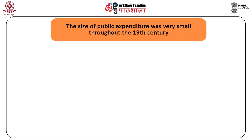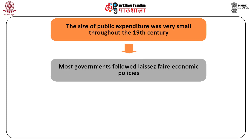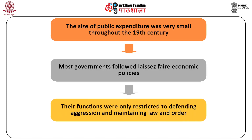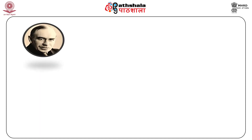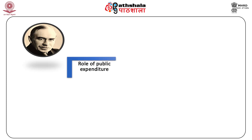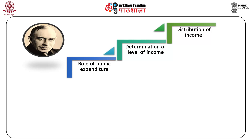The size of public expenditure was very small throughout the 19th century, as most governments followed laissez-faire economic policies and their functions were only restricted to defending against aggression and maintaining law and order. In the early 20th century, John Maynard Keynes advocated the role of public expenditure in the determination of level of income and its distribution.